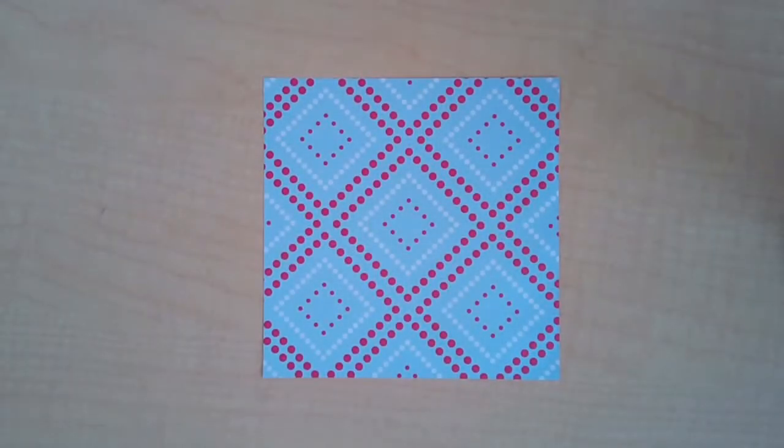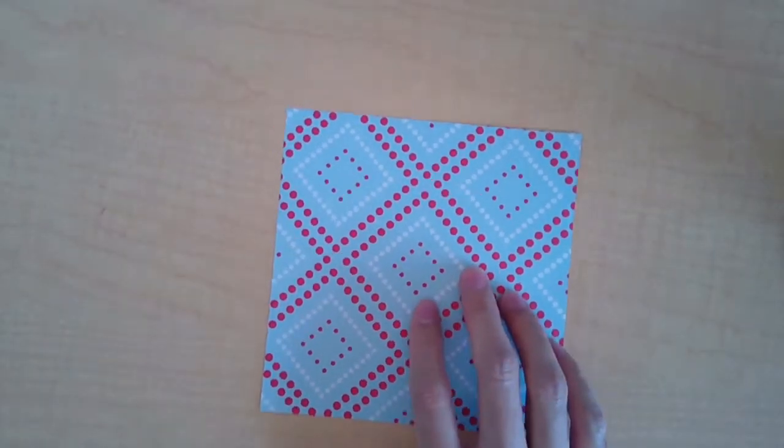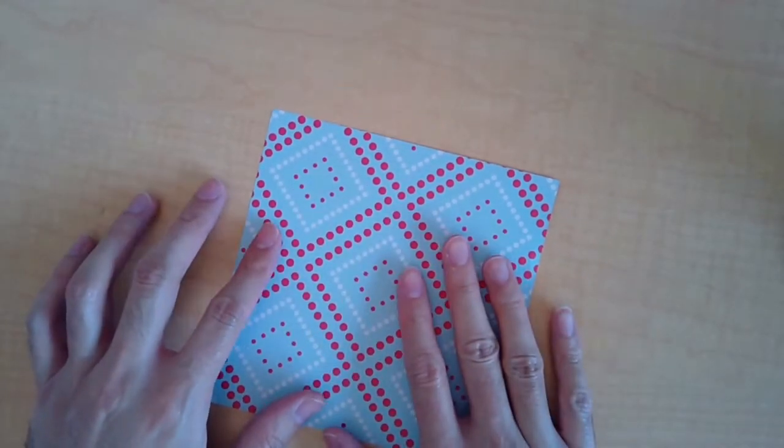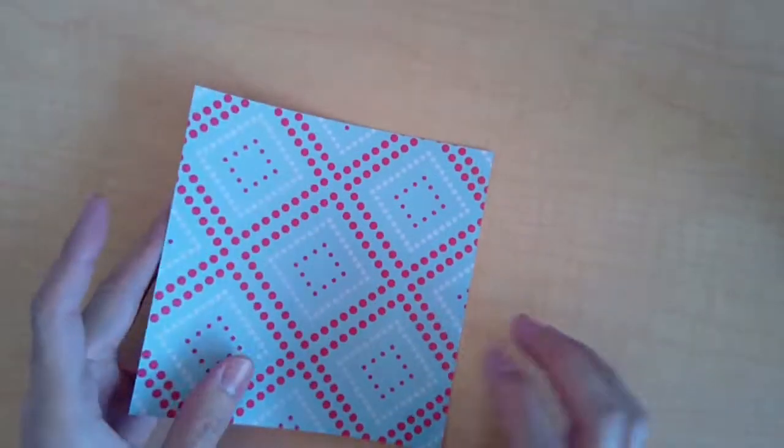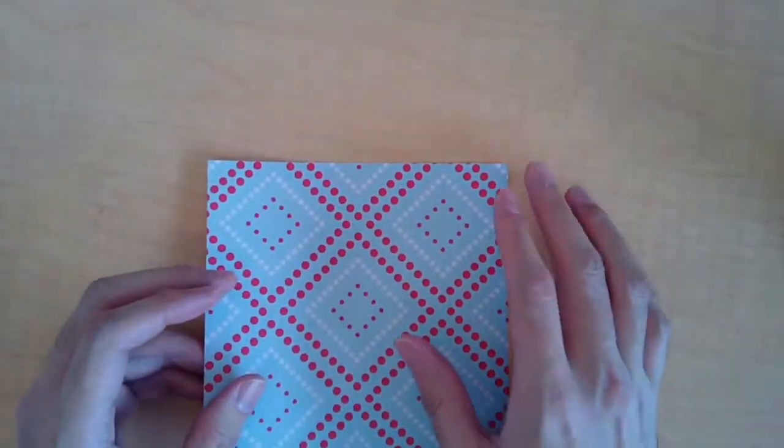First we're going to start with a square piece of paper. You're going to want to have the colored side on the top. If you don't have a colored side, that's fine.